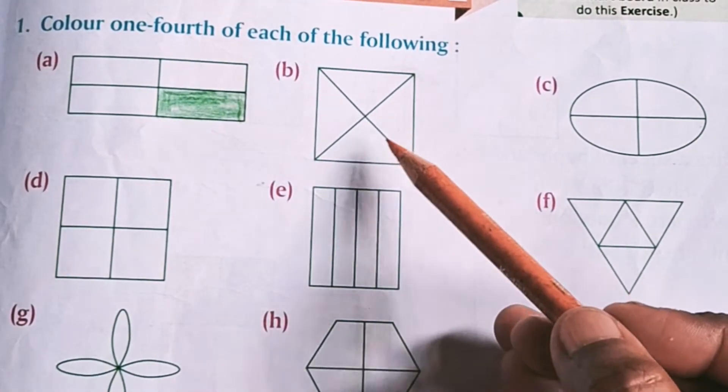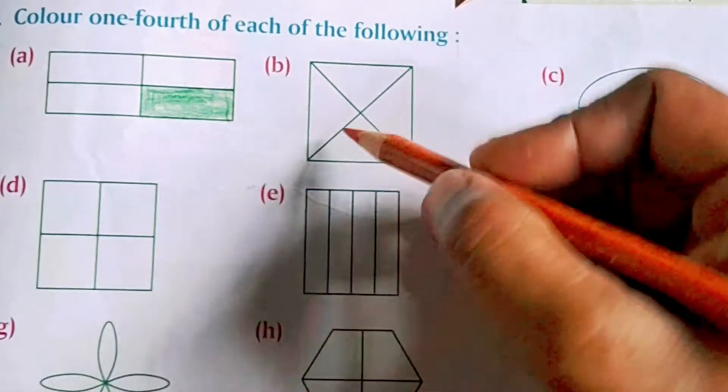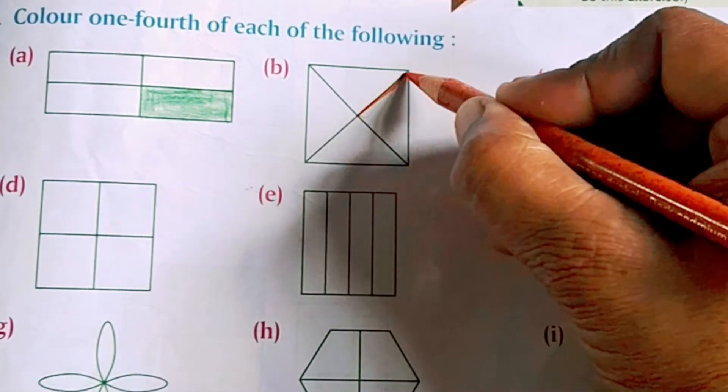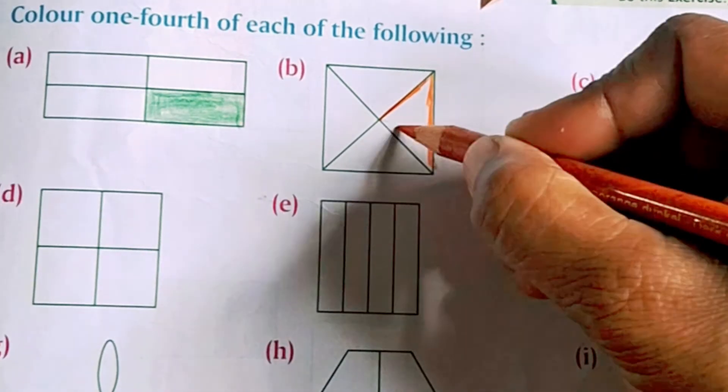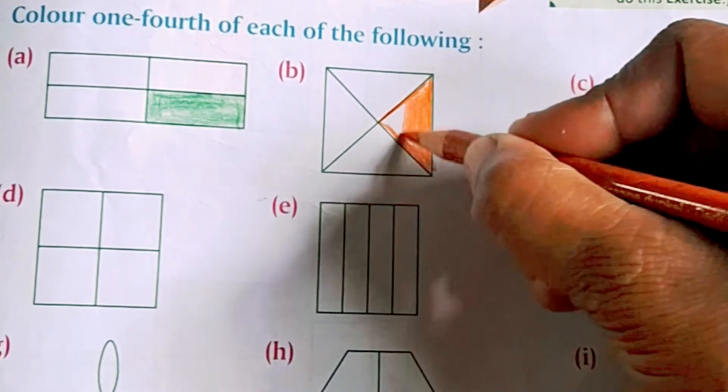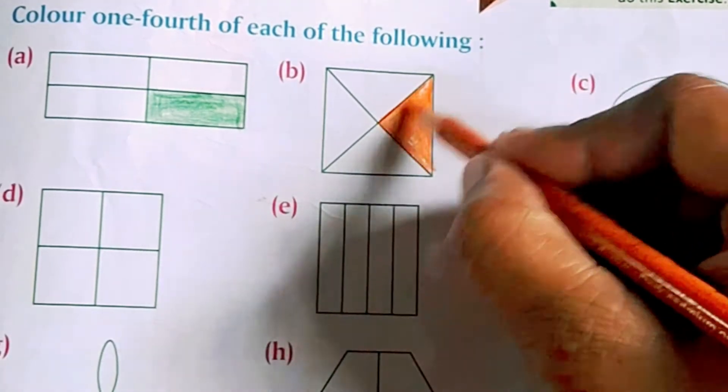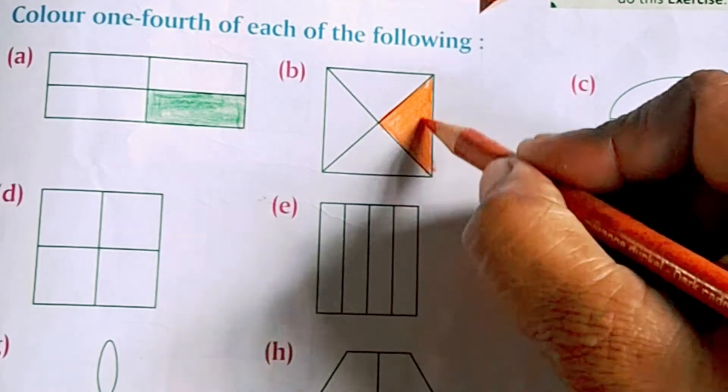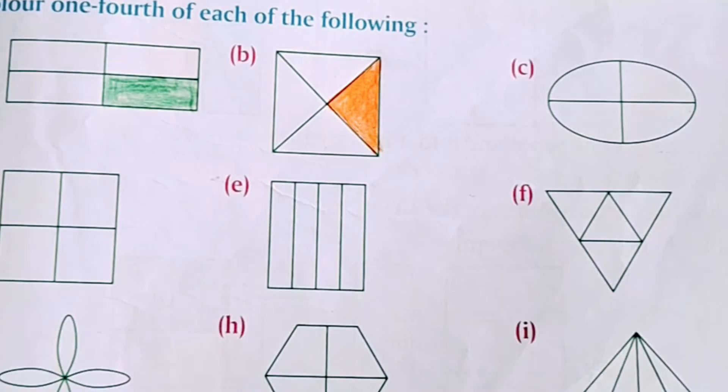Now we have a square and in this square again we have four parts. Let us color one part to make it one-fourth of the square. Now the colored part is one-fourth of the square.